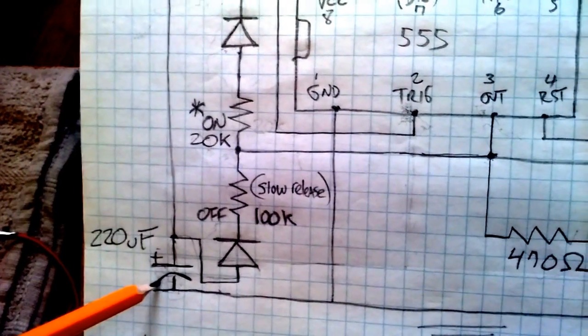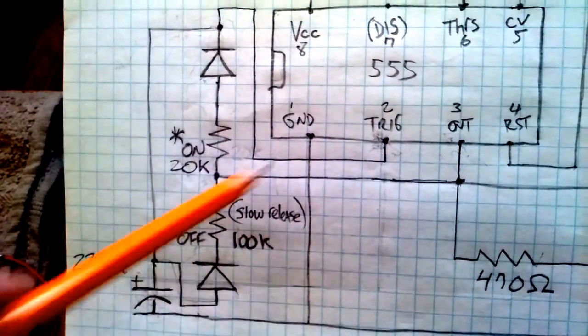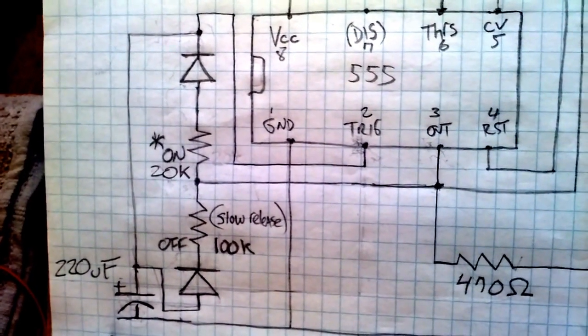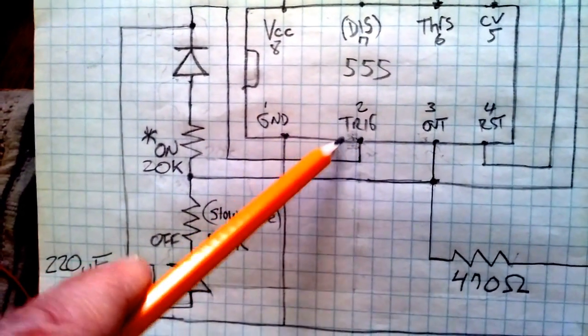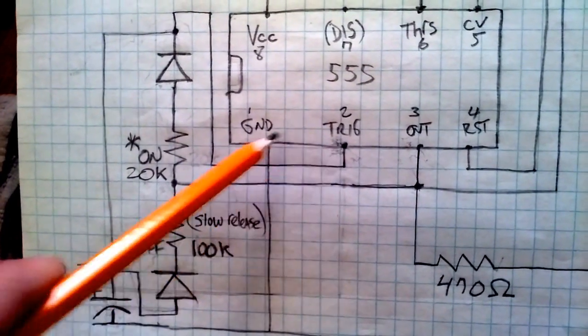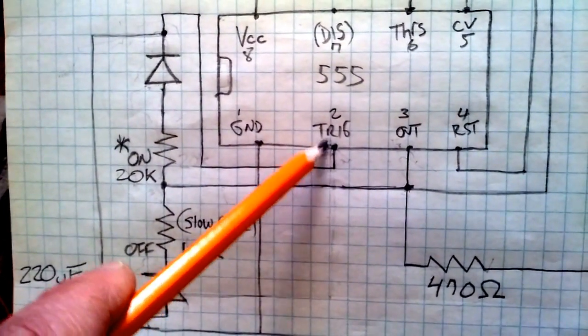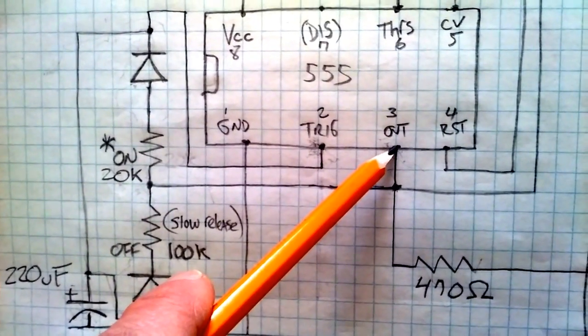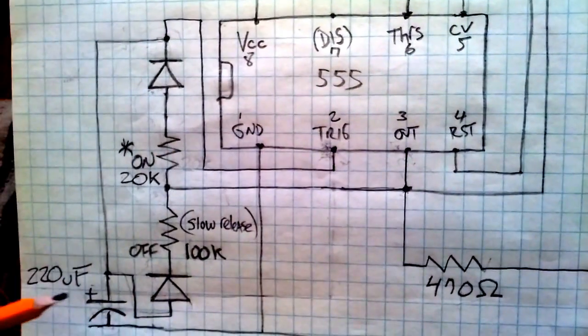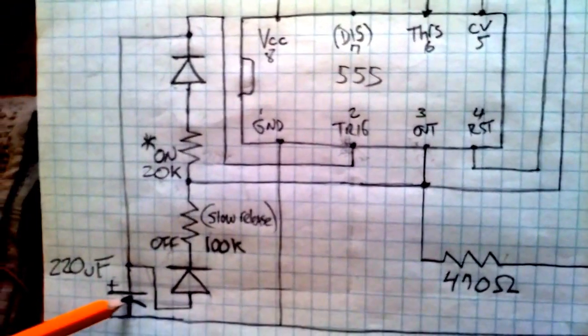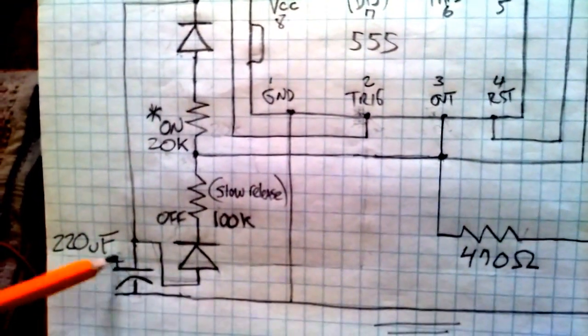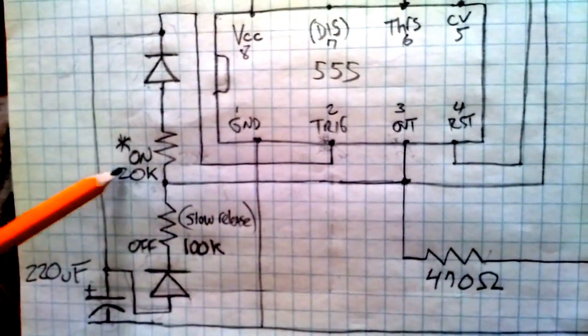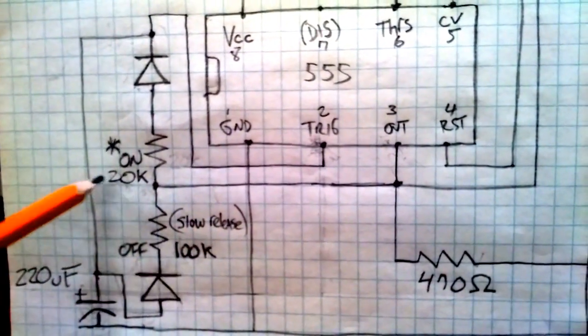trigger is set low. It's not getting two-thirds of the supply voltage, which essentially turns pin 3 off—kind of opposite what you might be thinking. So when this reaches two-thirds of supply voltage and begins to discharge, this 100k value is a lot greater than the 20k, so this is a short on time and a longer, or what I call a slower release, off time. Because this